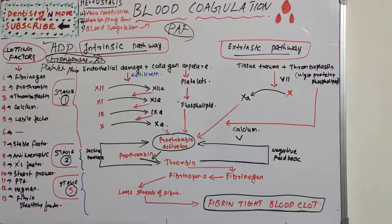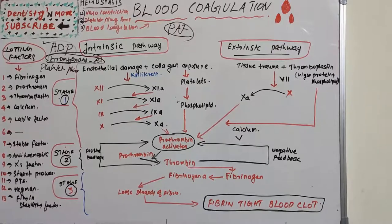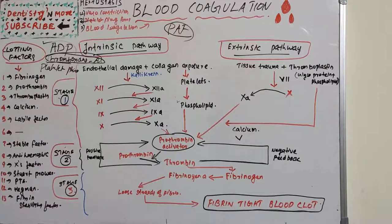Platelet aggregation is accelerated by platelet activating factor, known as PAF. That is platelet plug formation — the second stage. In the third stage, coagulation of blood, fibrinogen is converted into fibrin. Fibrin threads get attached to the loose platelet plug, which plugs the ruptured part of the blood vessel and completely prevents further blood loss.